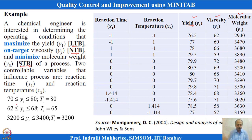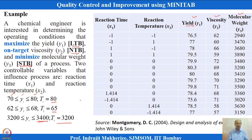The boundary conditions are taken from Montgomery's book. y1 should be within 70 to 80 with a target value of 80. y2 should be between 62 and 68 with a target value of 65. y1 we want to maximize with target 80. The third response is a minimization problem — anything below 3400 is fine, and we have defined some target values. Minimization means any value below 3400 is sufficient. We have to solve this problem.